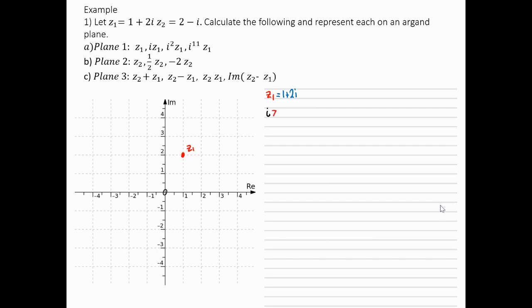i times Z1, well let's compute this algebraically first and we'll see what happens. i times 1 plus 2i, well that's i plus 2i squared. i squared is minus 1 so we'll get i plus 2 times minus 1. We'll get minus 2 plus i if I put the real part first. We go 2 to the left and then 1 up to find i times Z1.